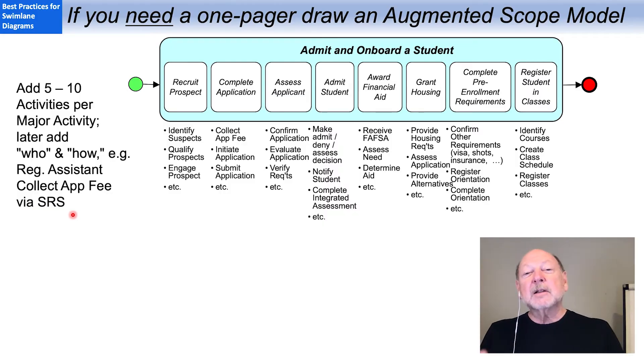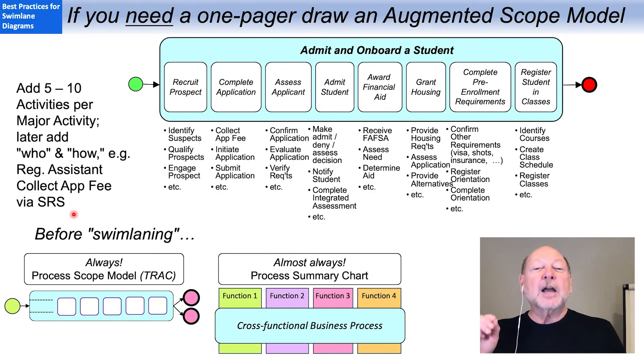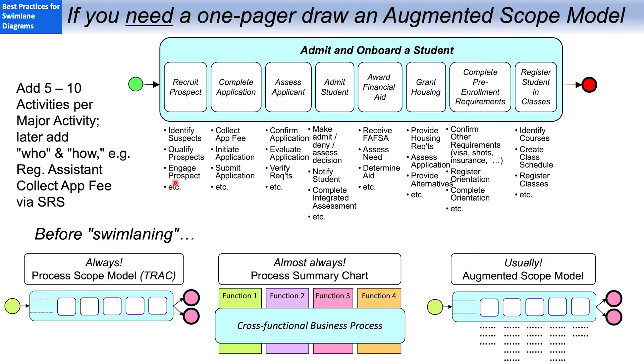And this leads to an interesting observation from recent years. I've stressed earlier, always before doing any swim lane diagramming, I draw a scope model. So I know where the process begins and where it ends. I almost always draw a summary chart to illustrate the cross-functional nature of the process.